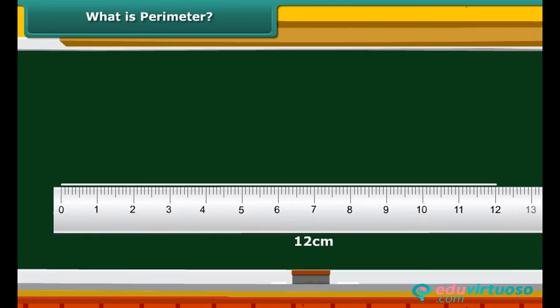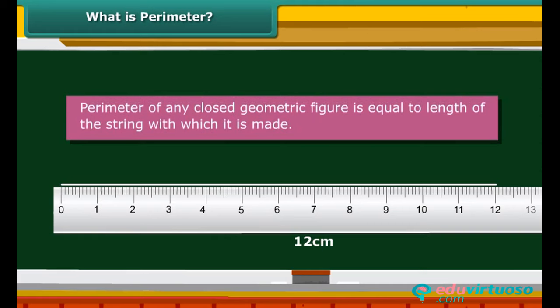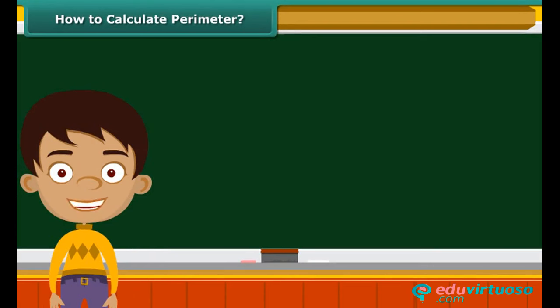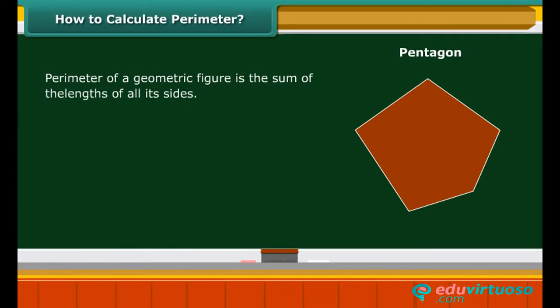We can generalize by saying that the perimeter of any closed geometric figure is equal to the length of the string with which it is made. Now that you have understood what perimeter stands for, let us try to calculate the perimeter of a pentagon.